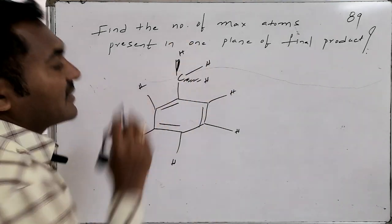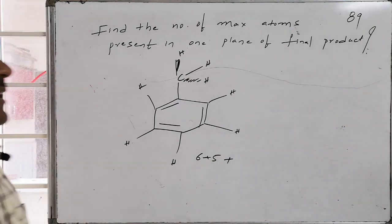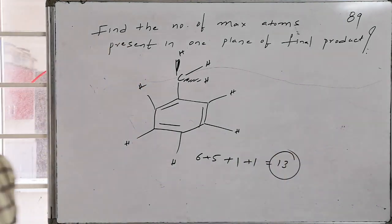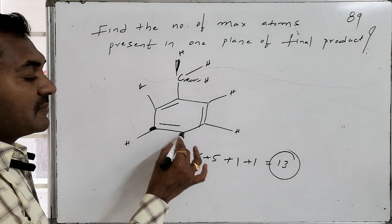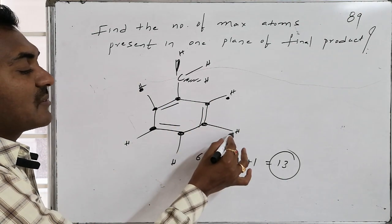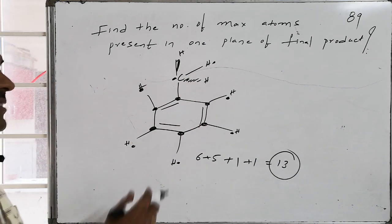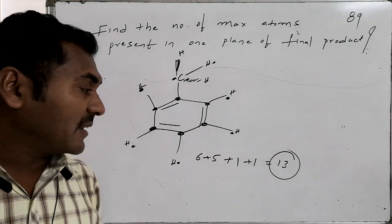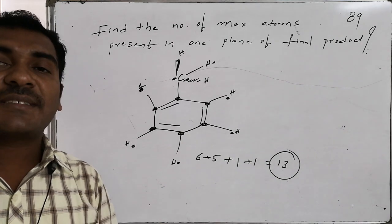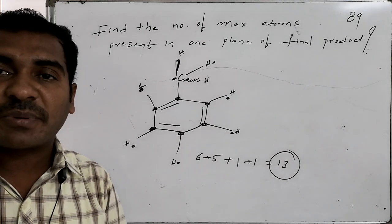In methylbenzene, writing out the structure: at maximum we can count six carbon atoms in the benzene ring, plus five hydrogens on the ring, giving eleven; plus the methyl carbon atom gives twelve; plus one hydrogen on the methyl group gives thirteen. Rounding those atoms that are in-plane — the six carbons, six ring hydrogens, five ring hydrogens, the methyl carbon, and one hydrogen — the total count is 13 atoms present in one plane. So the product is methylbenzene and the maximum number of atoms in one plane is 13.